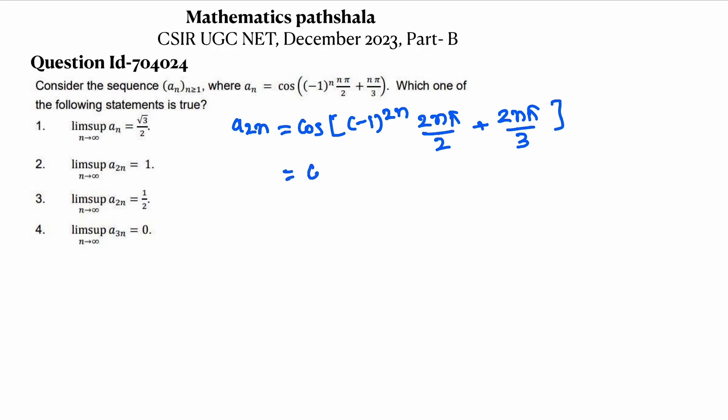So it becomes cos... what is (-1)^(2n)? It's 1. So it becomes nπ + 2nπ/3. So it becomes cos(5nπ/3).